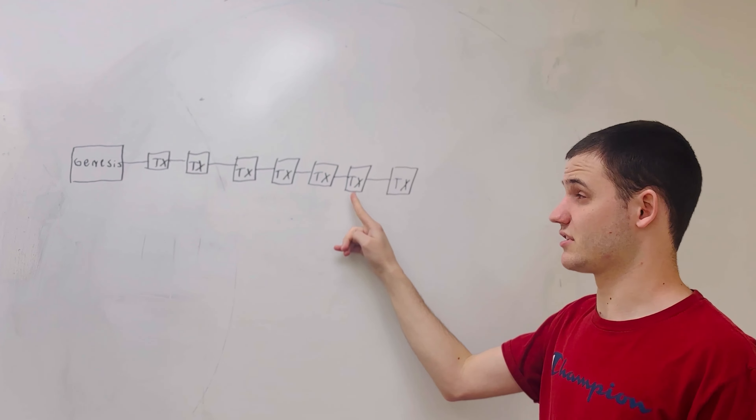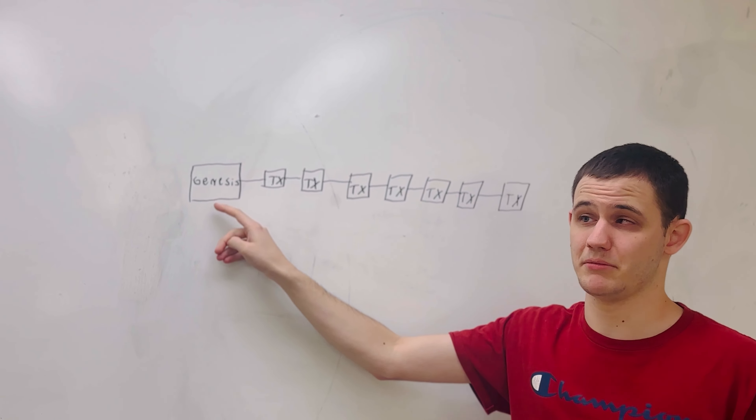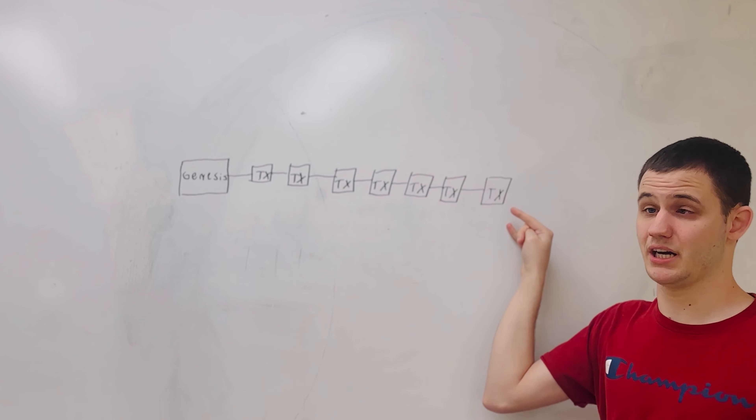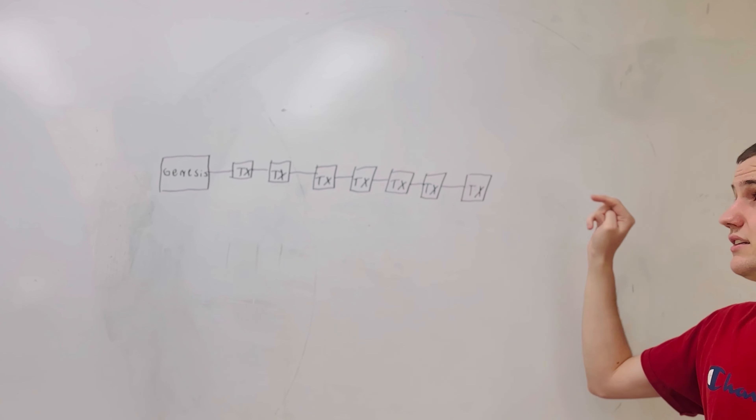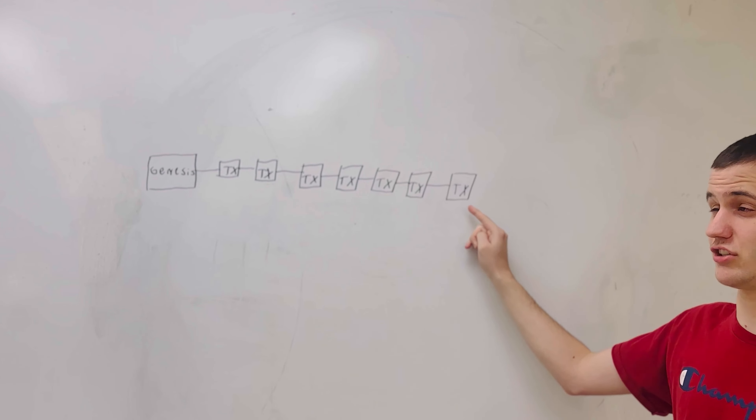Bob needs to know when was this token created, all the way back here, and then Bob needs to know, when Alice sent Bob this token, which is represented by this transaction here, that transfer from Alice to Bob, how can Bob know that the token he is receiving from Alice actually came from this Genesis all the way back here? That's why it's called the Back to Genesis problem.